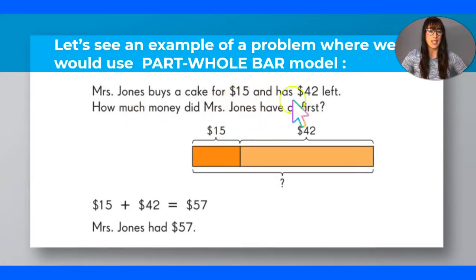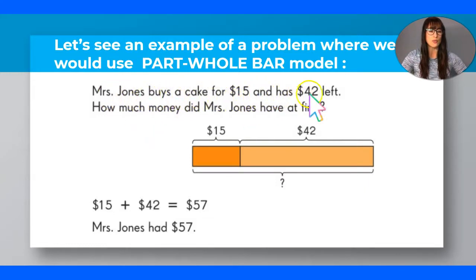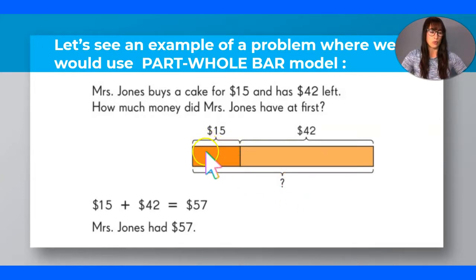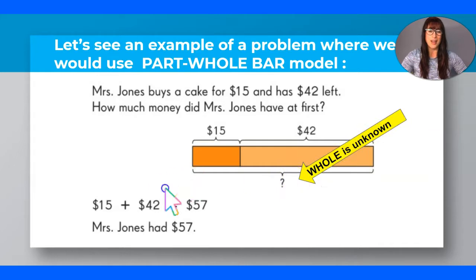Mrs. Jones buys a cake for $15 and has $42 left. How much money did Mrs. Jones have at first? Read it again to understand the problem. When I analyze it, I can tell we don't know how much she had before she spent the $15. We know she only has $42 left, but what was the total before she bought the cake? So the question mark goes in the whole — the smaller number goes in the smaller part and the bigger number in the bigger part. Looking at this bar model, my whole is unknown, so I must do addition.